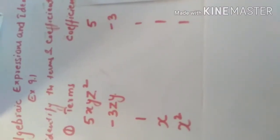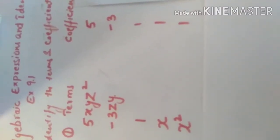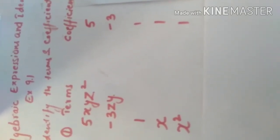The next one is 1 plus X plus X square. The three terms are 1, X and X square. And the coefficients are 1, 1 and 1.